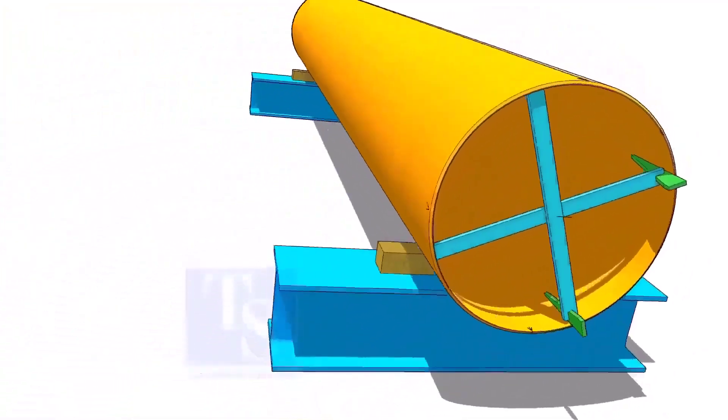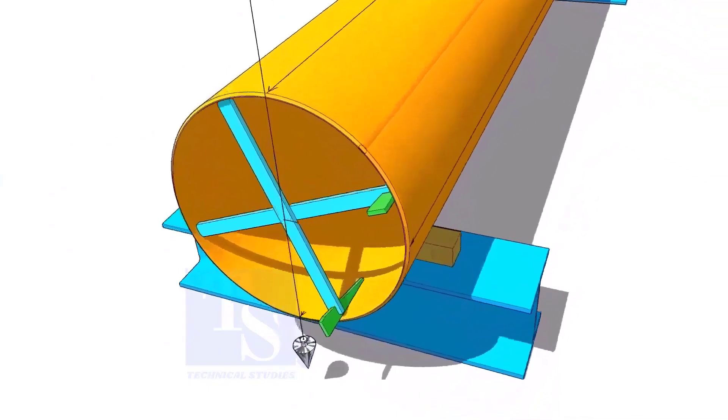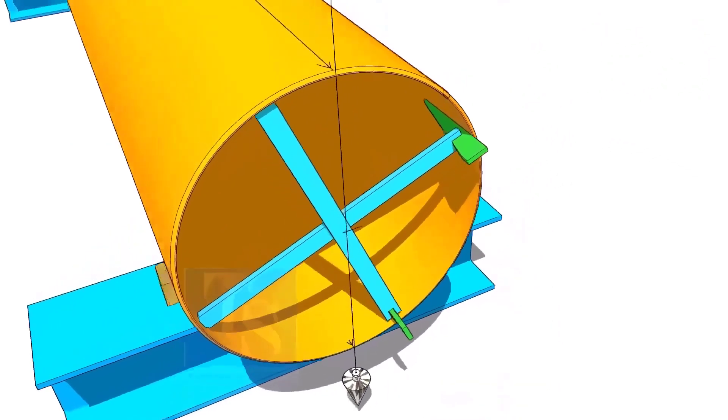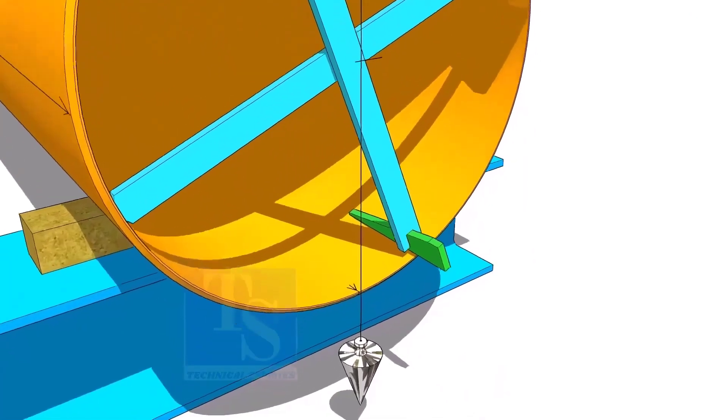Draw all the center lines. Put the plumb on the top side line. If the string passes through the line on the bottom, the lines are correct.